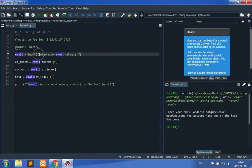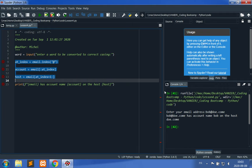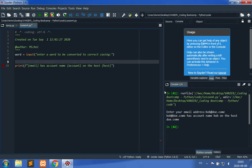Let's ask the user for input: 'enter a word to be converted to correct casing'. We'll call that word. Then we will extract two parts. First_letter is equal to word, and the first letter, zero.